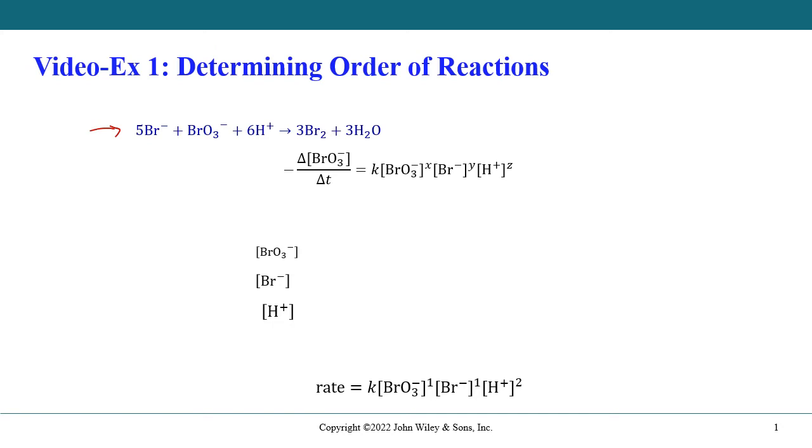If we're to write the rate equation for the rate of disappearance of the bromate anion with time, we end up with an experimental value that's given here, where we have the rate constant, we have the concentration of bromate raised to some power x, we have the concentration of the bromide ion raised to some concentration y, and we have the H plus ion concentration raised to some power z.